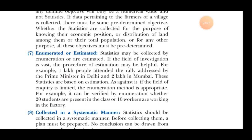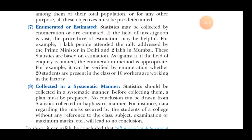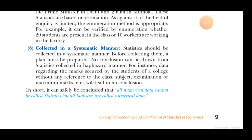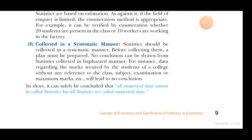Seventh, enumerated or estimated — statistics may be collected by enumeration or estimation. If the field of investigation is vast, estimation may be helpful. For example, with India's population, we cannot go to every person's house, so we use estimation. Eighth, collected in a systematic manner — data must be collected step by step in a systematic way; data collected without any conclusion or method will not qualify as statistics.